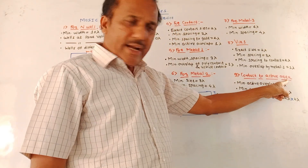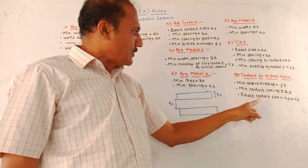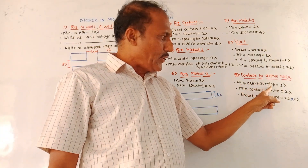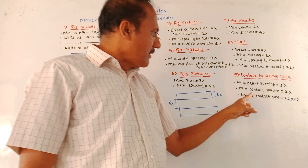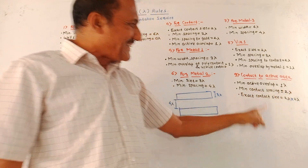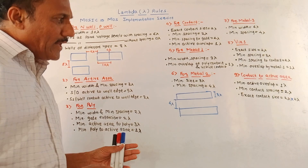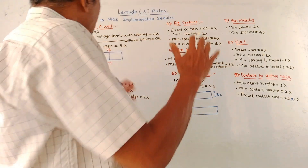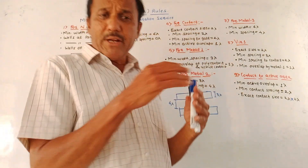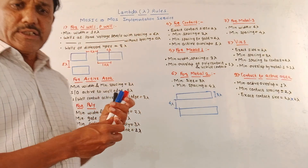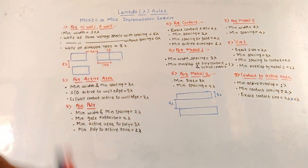For contact to active area rules: minimum allowed active overlap is 1 lambda, minimum contact spacing is 2 lambda, and exact contact size is 2 lambda by 2 lambda. These are the different lambda rules used for designing. Dear students, that's it for today's session. Thank you, and thanks a lot for watching this video.